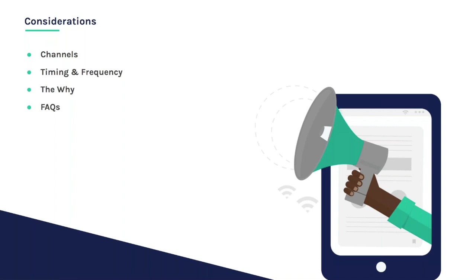When creating a plan for these communications, it's important to consider a few things. Number one, work with your communications team to understand the channels that get the most engagement from families, whether using your district's Facebook page, the website of your individual schools, or messaging through your learning management system. It's important that the channels you use are places that parents are likely to see and are used to going to for district updates and resources.